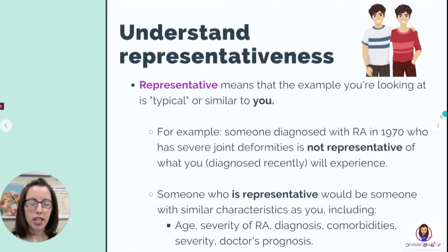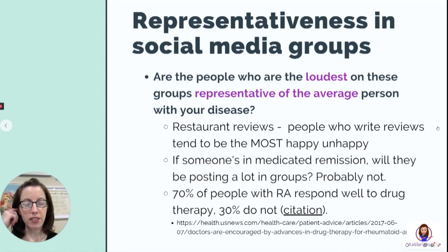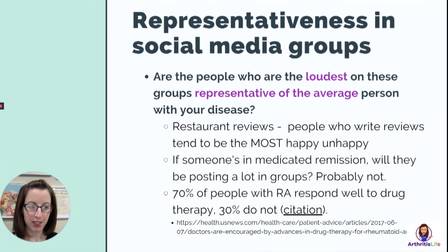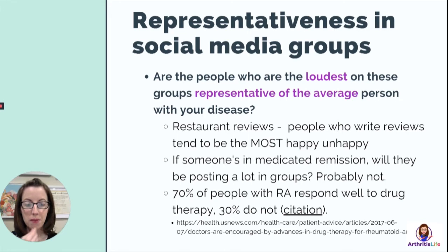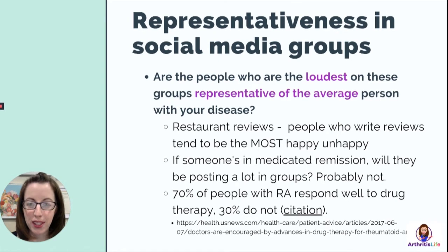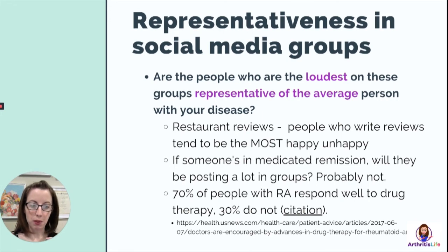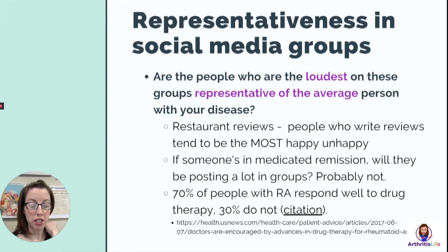You also want to look at representativeness at the group level — the people who are loudest or most active in groups may or may not represent the average person with your disease. It's like restaurant reviews: people who write them are usually either extremely happy or extremely unhappy. People in near-complete remission are probably not posting a lot in groups — they can be a silent majority. Studies cite that 70% of people respond well to drug therapy for RA, and 30% do not.